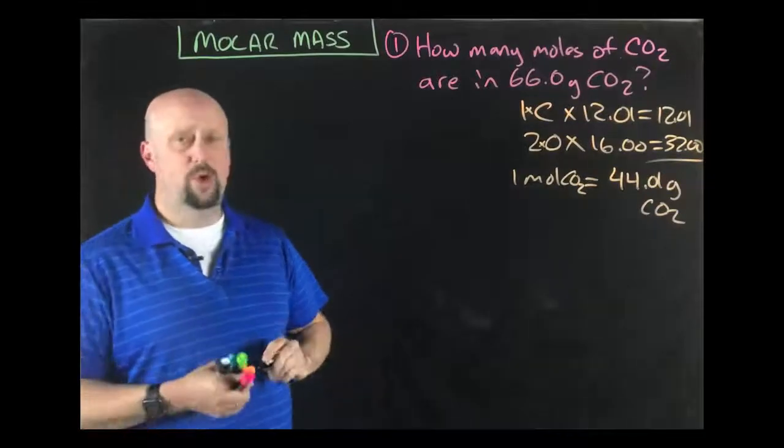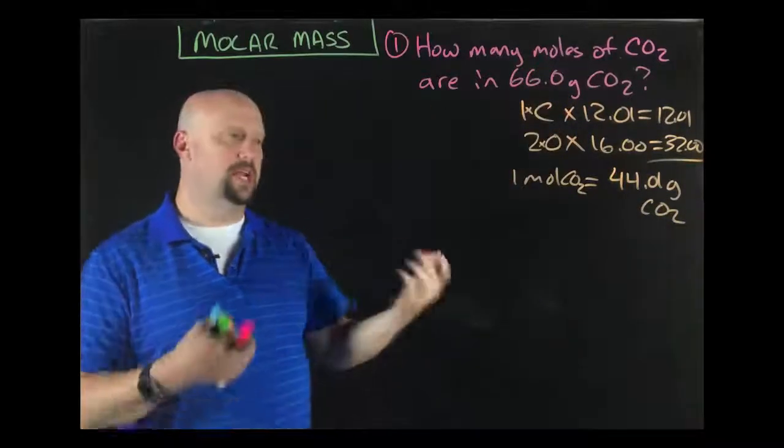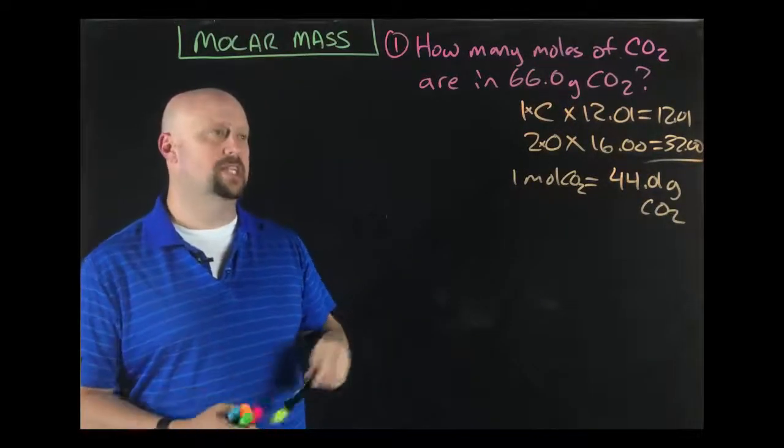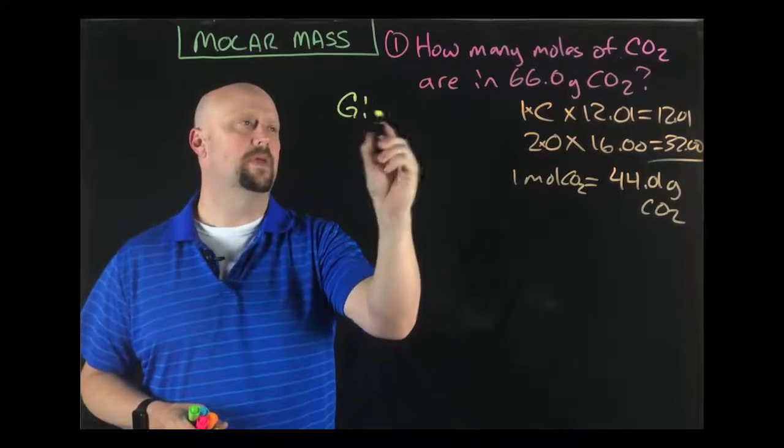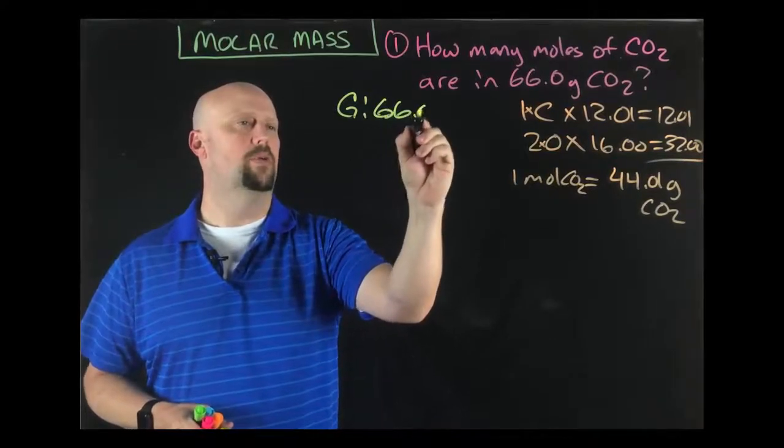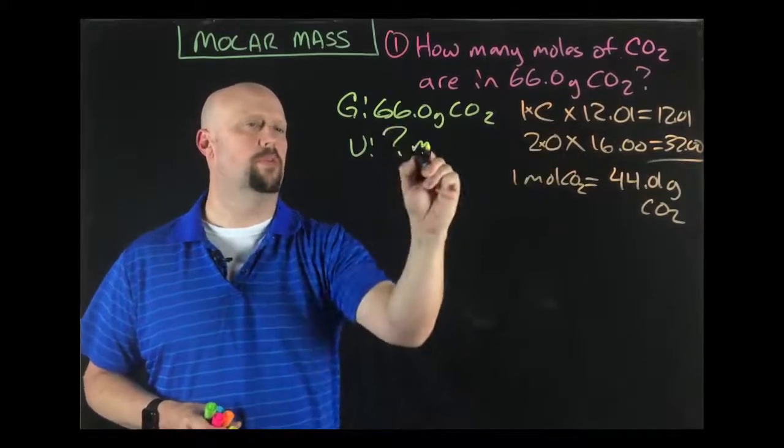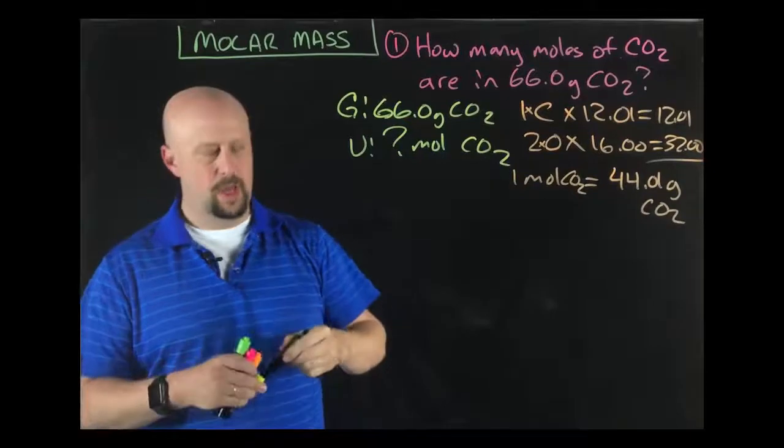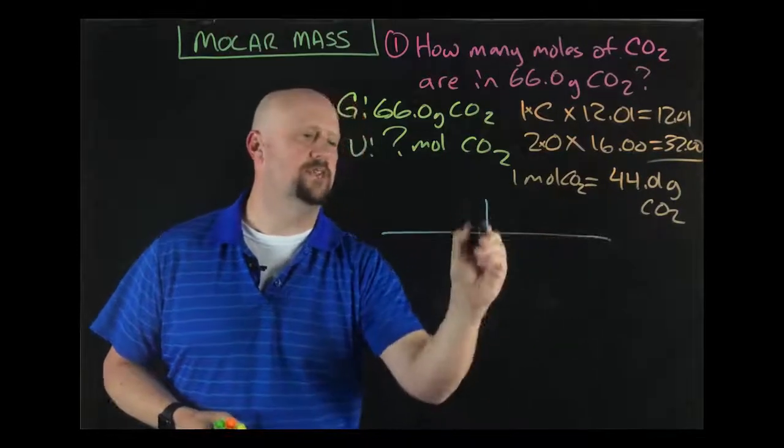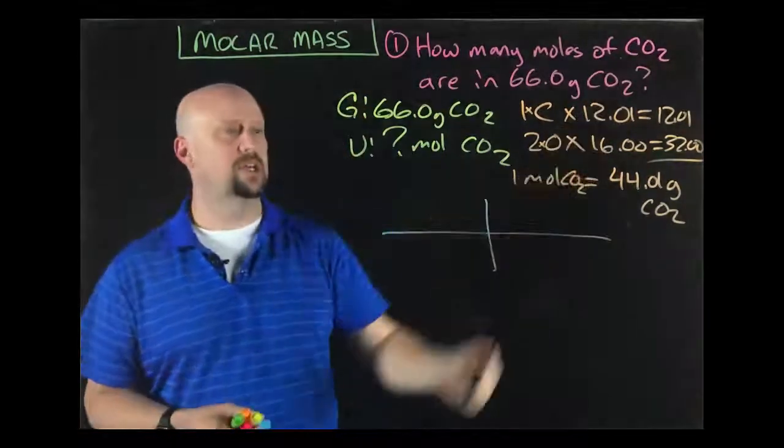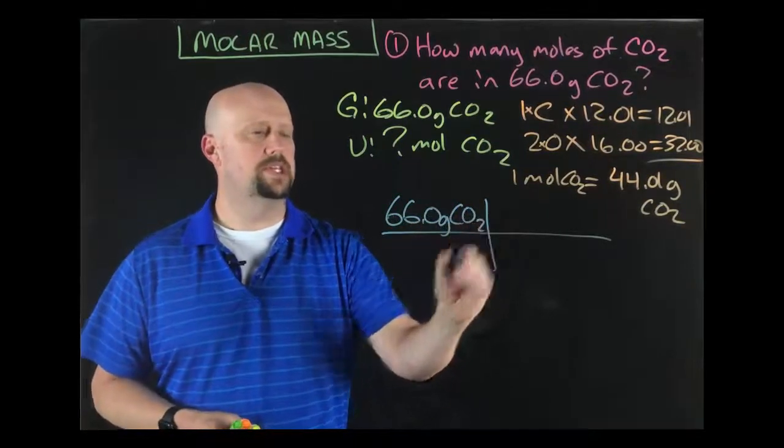And so at this point, it works just like the problems that we worked before. Once you've found the molar mass and we're going from grams to moles, then everything works out exactly the same as it did in the last video. So I'm going to write down my given and my unknown really quickly. My given is 66.0 grams of CO2. I'm looking for how many moles? So I'm looking for moles of CO2. Then we can set up our conversions and do our math, just like we did in the previous video. The only difference here is that I had to calculate the molar mass first instead of just reading it off.